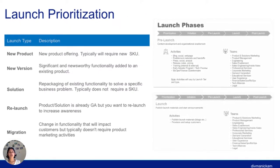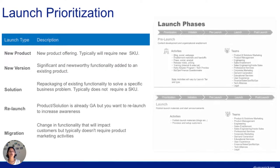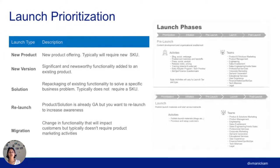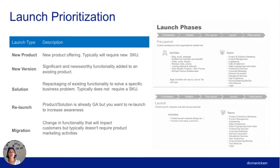Once you have the launch prioritization, you're also looking at your launch types — is it a new product, a new version, a solution? All of this information helps you define what kind of launch it is. Working together with different stakeholders and teams, you can define the different launch phases — all the way from pre-launch activities and the teams involved, to launch day, and then working towards your post-launch.